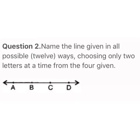Question 2: name the line in all possible ways — that is, 12 ways. You have to name the line choosing only 2 letters at a time from the 4 given points: A, B, C, and D. Using these 4 points, we name the line choosing only 2 letters at a time.